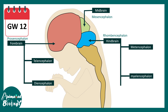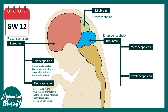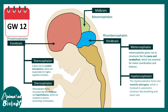At around gestational week 12, the telencephalon gives rise to the cerebral hemispheres, which are responsible for higher cognitive processing and function. The diencephalon forms structures like the thalamus and hypothalamus, which are involved in sensory processing and homeostasis. In the rhombencephalon, the metencephalon gives rise to structures like the pons and cerebellum, essential for motor coordination and fine-tuning balance. The myelencephalon gives rise to the medulla oblongata, which is involved in autonomic functions like breathing and heart rate control.